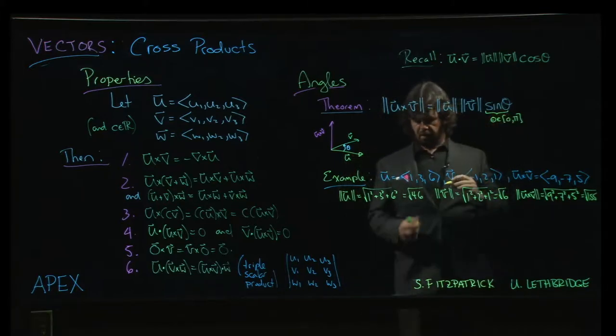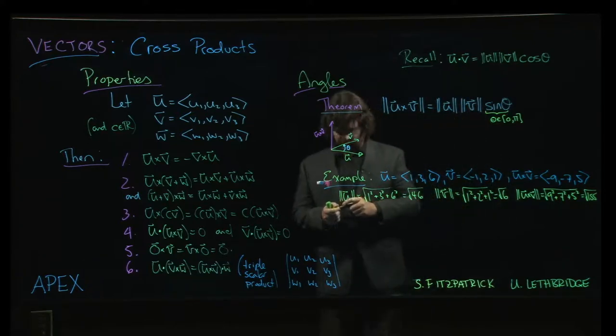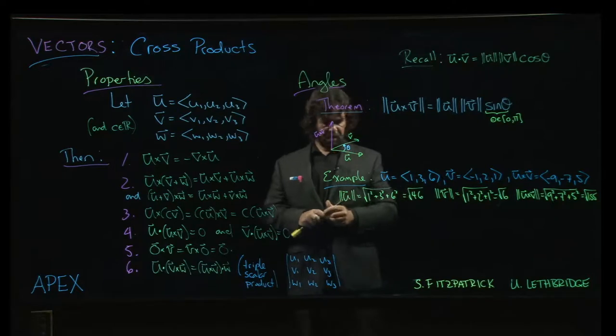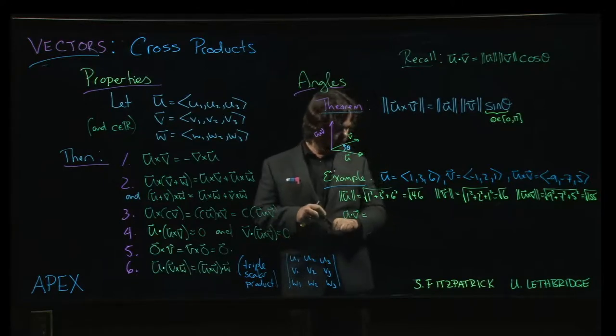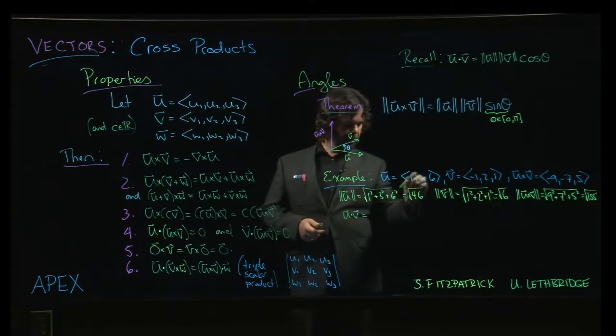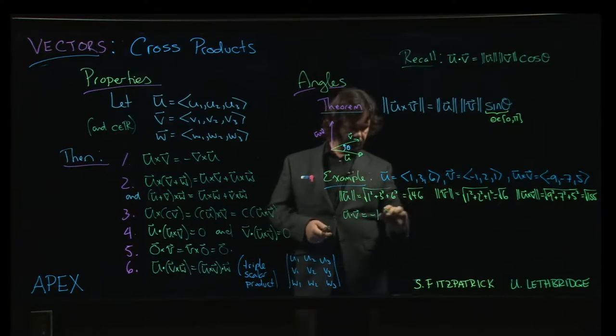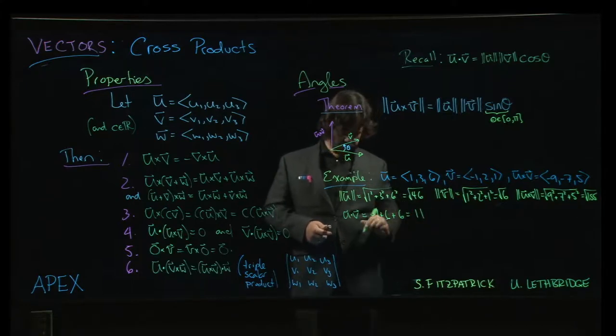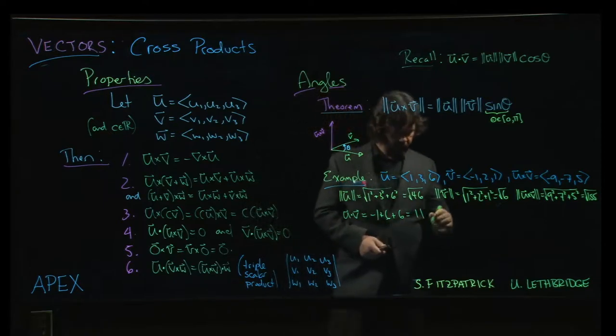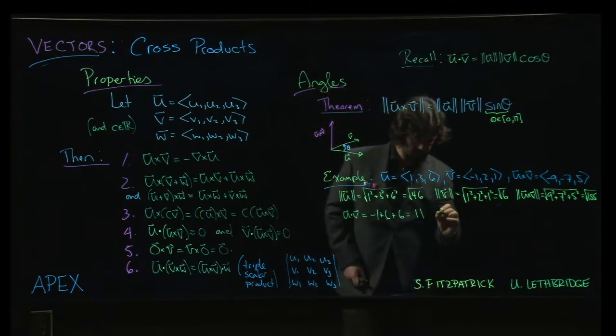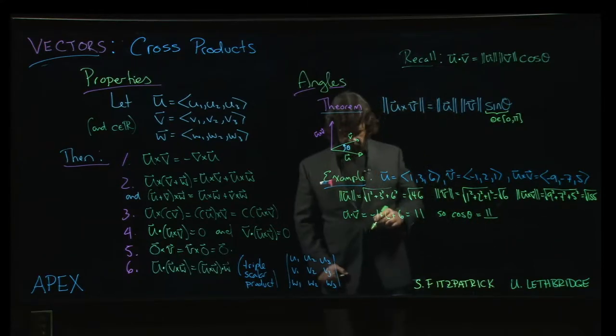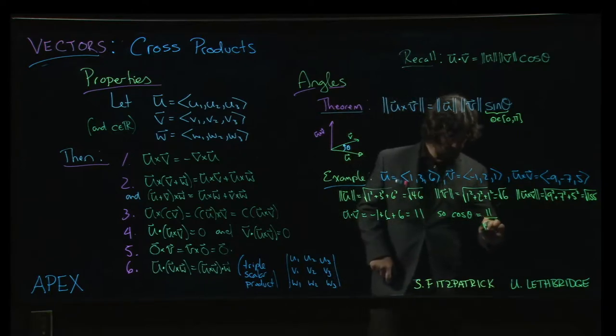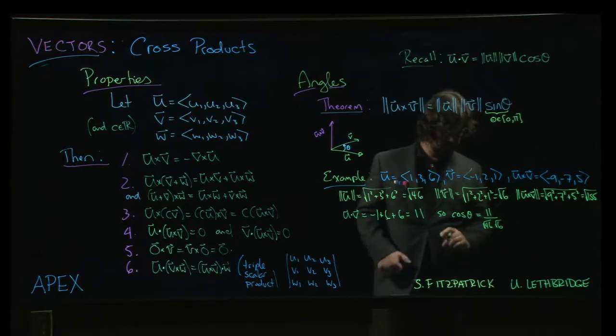Oh, but we need, how do we get the angle? Well, actually we know how to get the angle because we know how to get the angle from the dot product. We know that u dot v is going to be minus 1. 3 times 2 is 6 plus 6. 6 times 1 is 6. So that's 11.